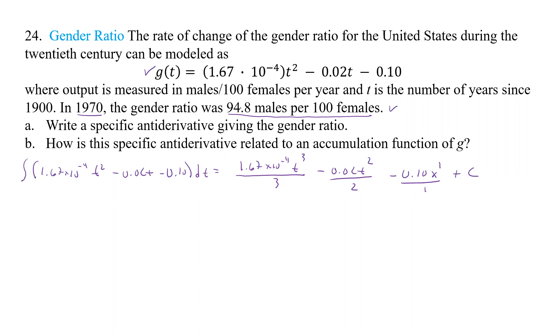But let's find what C is. Well, C says we have this is going to be our output. Our input is going to be 70 because it's years since 1900, so that's 70. And so if we do that, we'll have 94.8 equals.